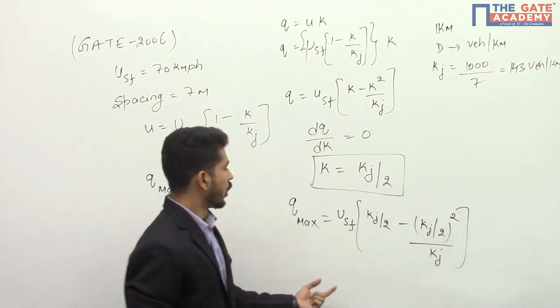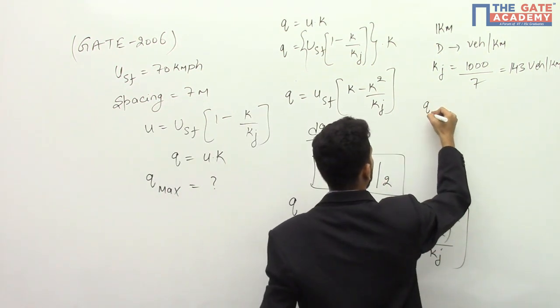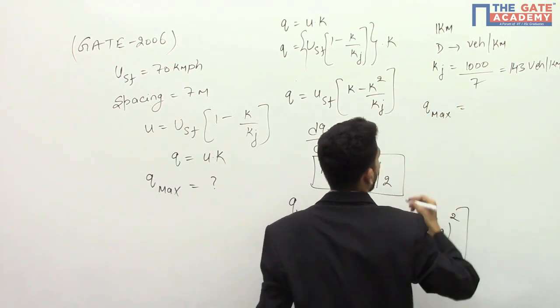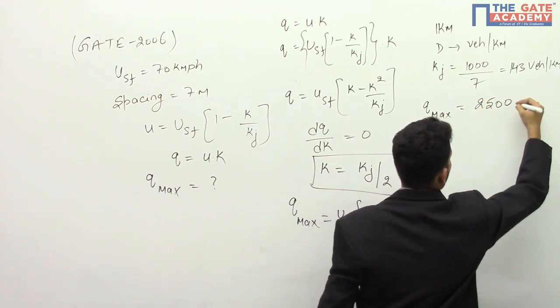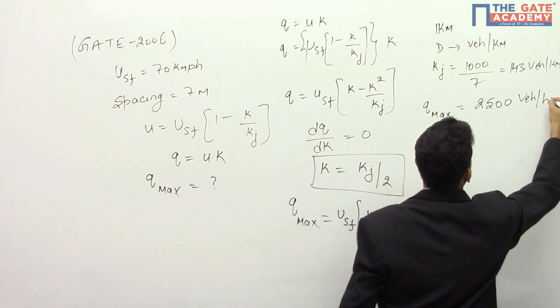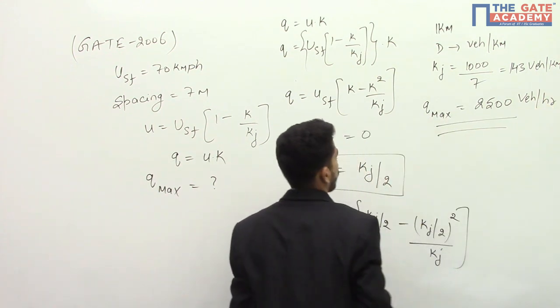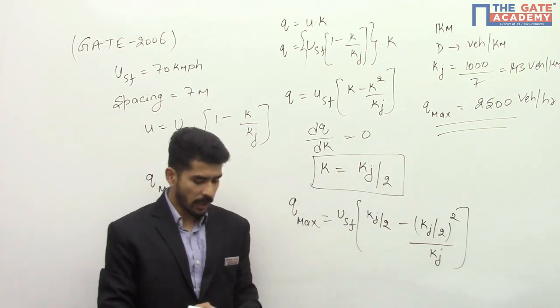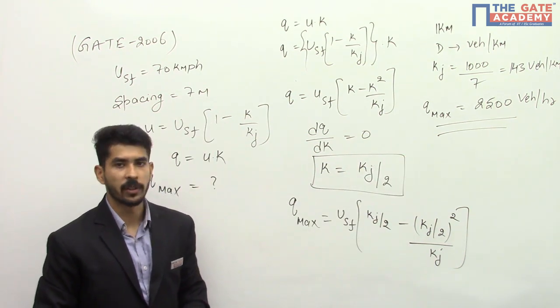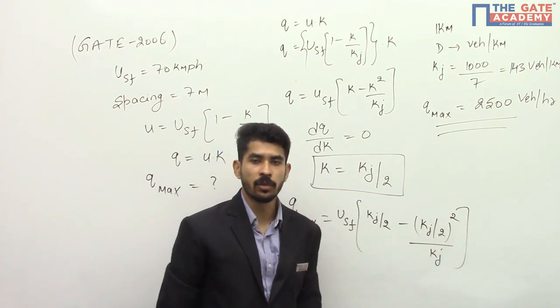So this is your usf in this expression, q max will be equal to 2500 vehicles per hour. Substituting both kj and usf in this expression you will get q max equal to 2500 vehicles per hour. Now this is the conventional approach.